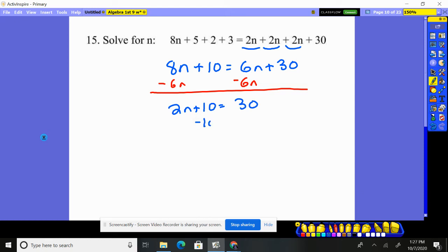I now will move my number over by subtracting 10. That'll put the variable here on the one side of the equal sign, the number on the other side of the equal sign. And now we divide by 2 to get our answer of 10.